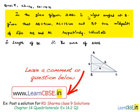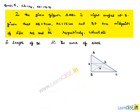In the given figure, triangle ABC is right-angled at B. Given that AB equals 9 cm, AC equals 15 cm, and D, E are points on sides AB and AC respectively, calculate the length of BC and the area of triangle ADE.